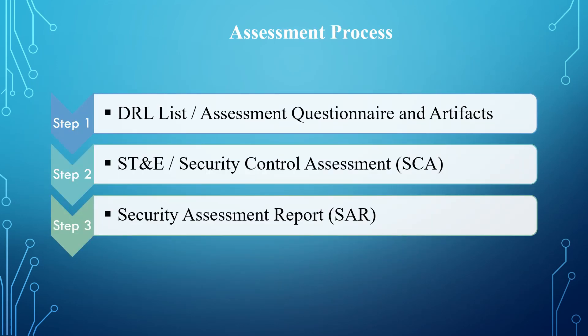There are three assessment processes. The first is the DRL list, which some assessors refer to as the assessment questionnaire and artifacts. The DRL list shows the total number of controls that will be assessed for a particular period, the evidence that has been requested from the technical team, the names of the POCs, the date the evidence or artifact is requested, and the due date for artifacts to be submitted to the assessors for review.